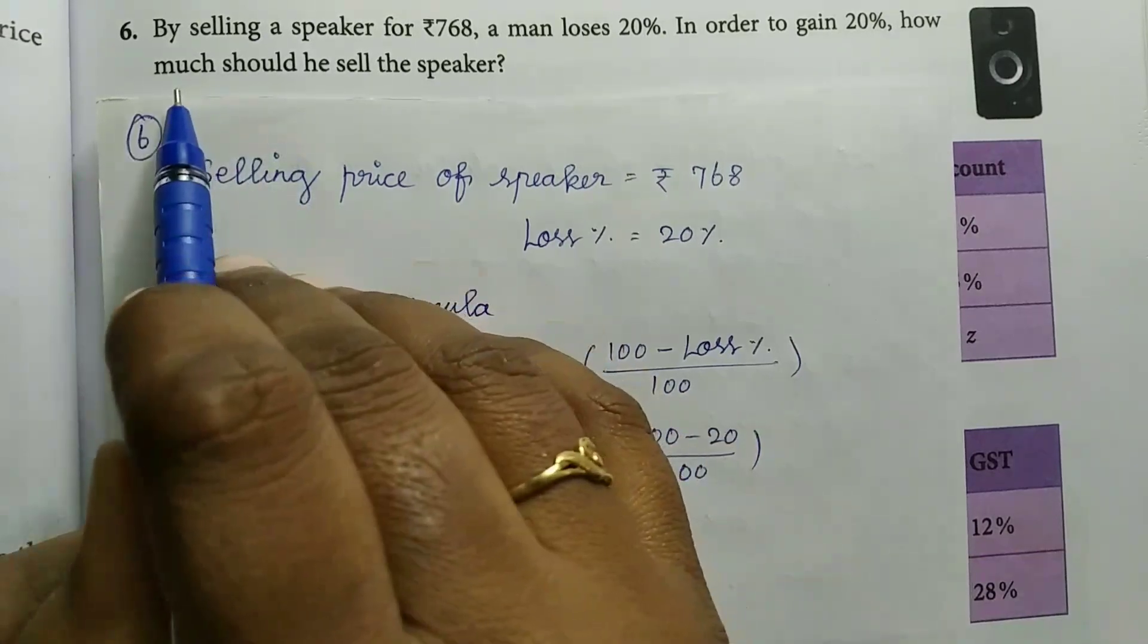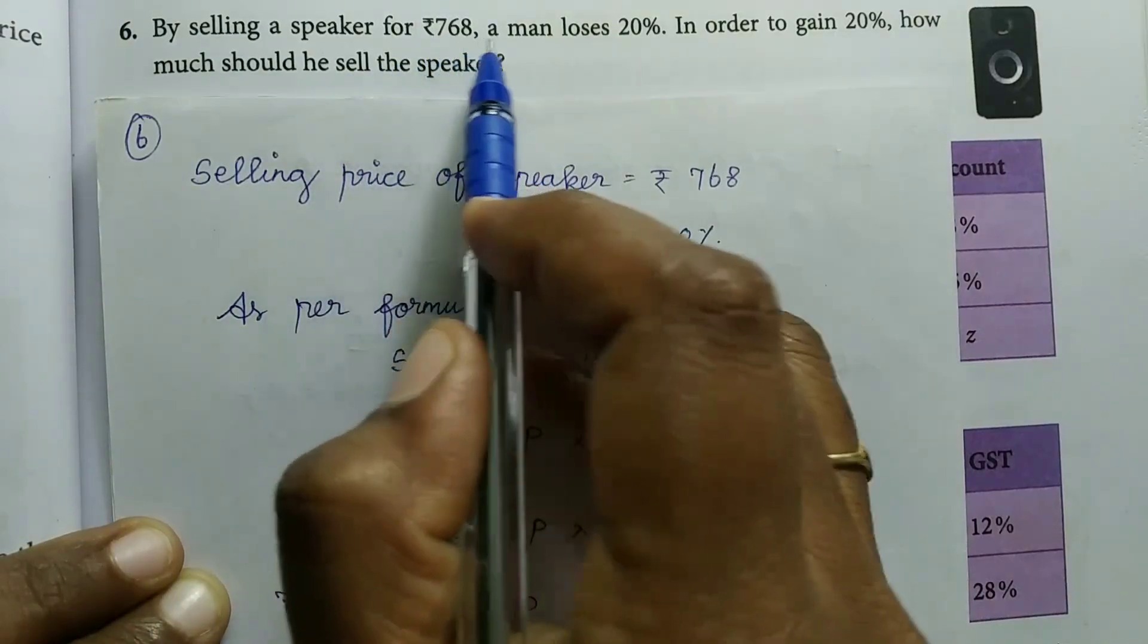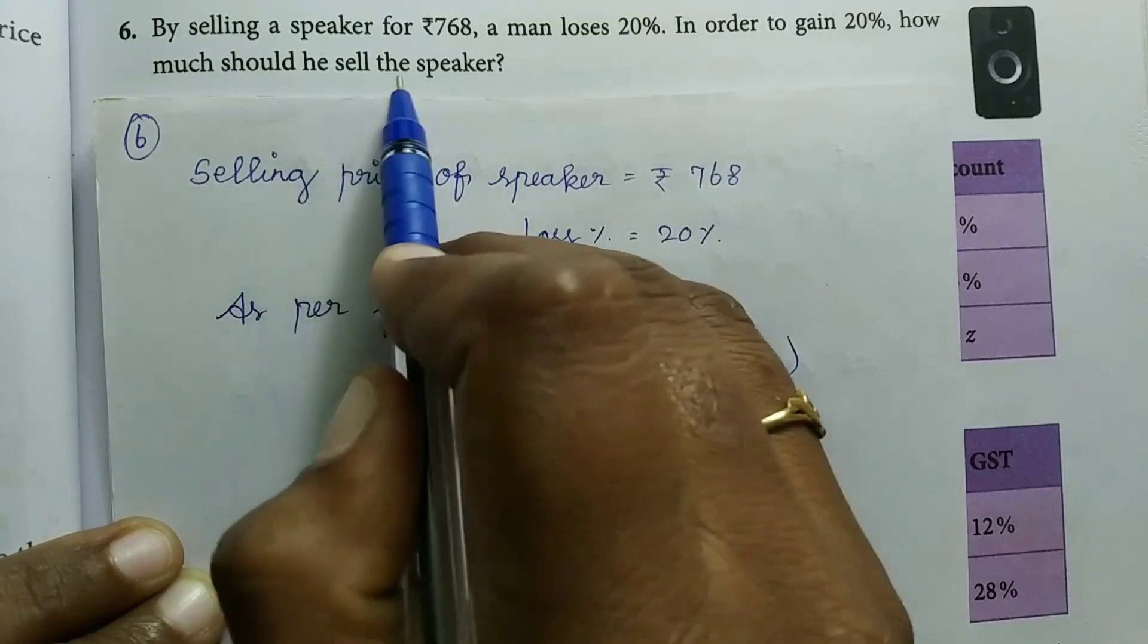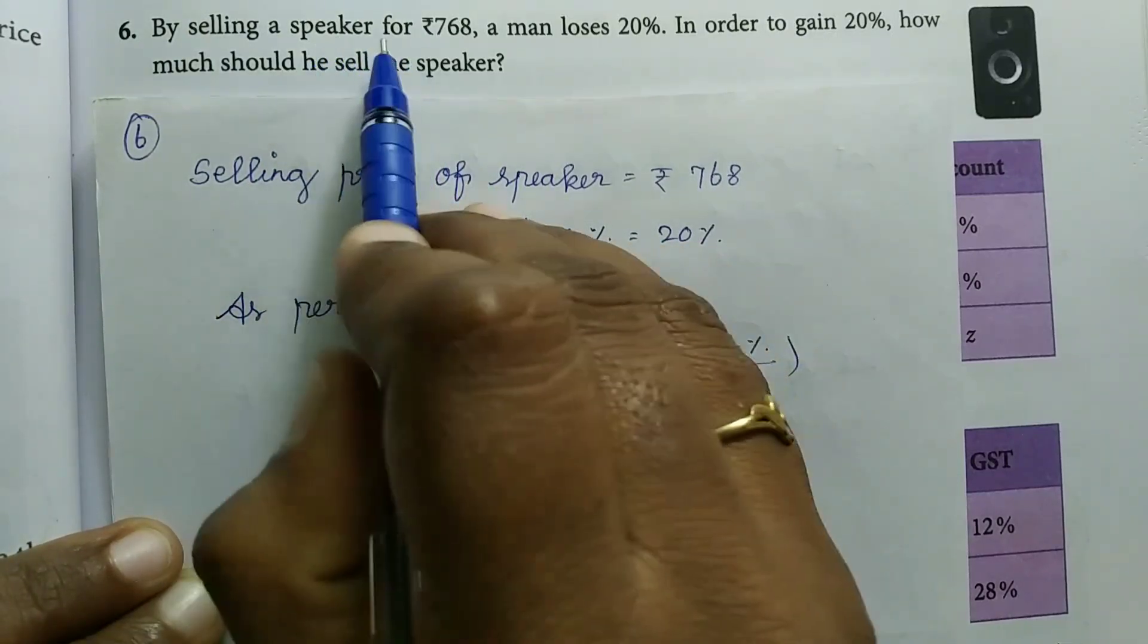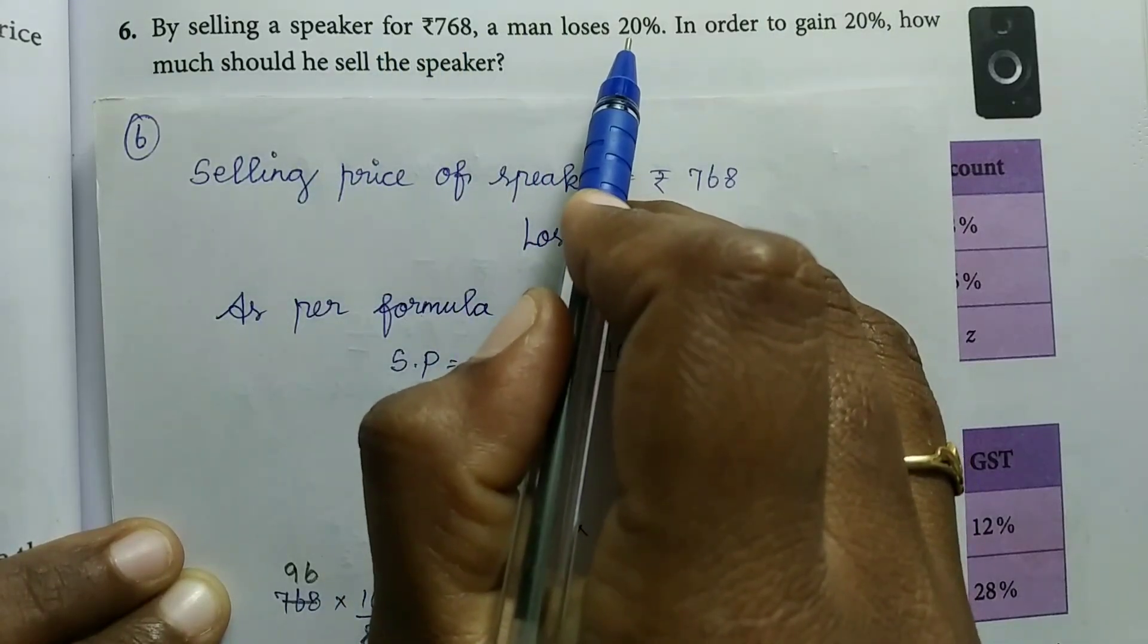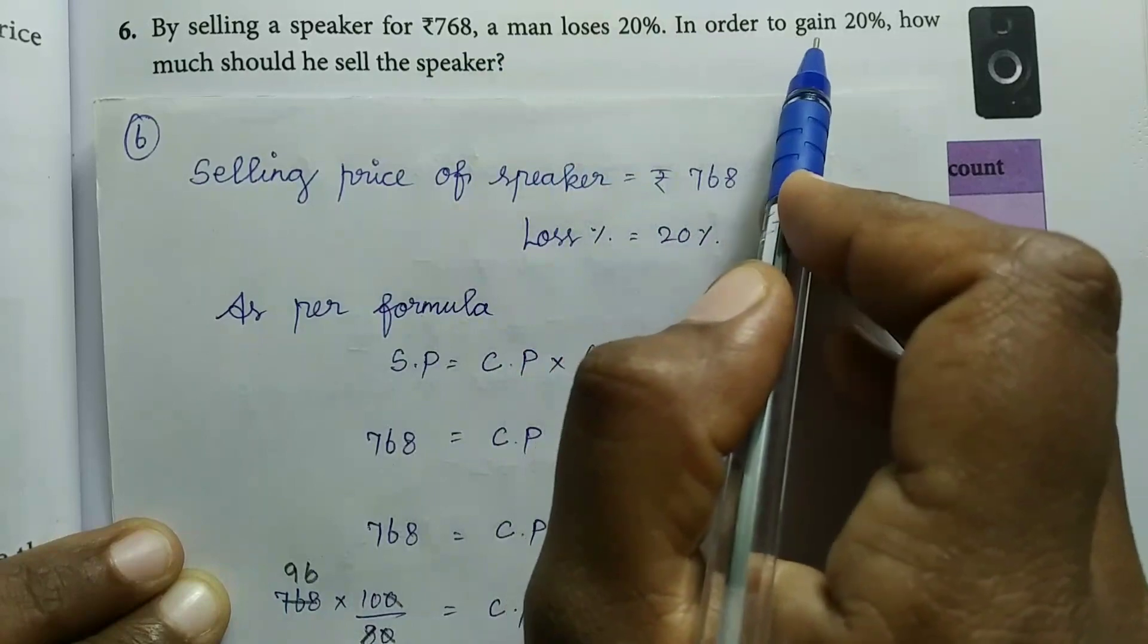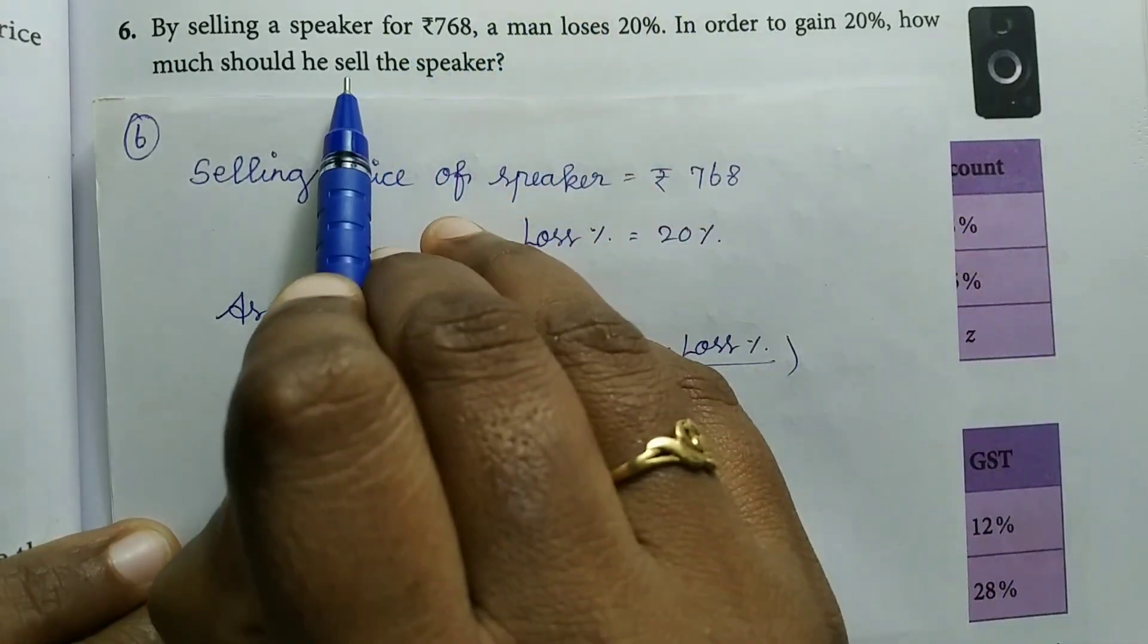Question 6 will be: By selling a speaker for Rs. 768, a man loses 20%. In order to gain 20%, how much should he sell the speaker? So one man is selling a speaker at 20% loss for $768, and we need to find the selling price for 20% gain.